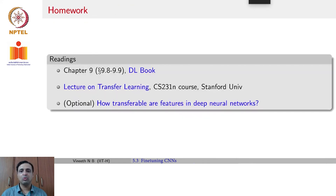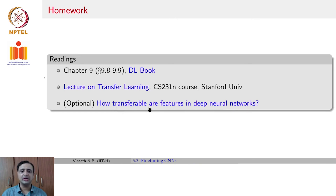For more reading, you can read chapter 9 of the Deep Learning book and the lecture on Transfer Learning in CS231N. One of the earliest articles that tried to study how transferable CNN features are is also recommended reading if you are interested.